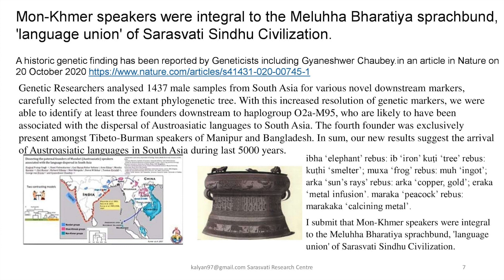Here is a Karain bronze drum like the Dong Son bronze drum, which shows an elephant — 'Iva' elephant — and a 'Kuti' tree — rebus 'Kuti' = smelter. A frog 'Mukha,' rebus 'Mugh' = ingot. On top of the tympanum: sun's rays 'Arka,' rebus 'Arka' = metal infusion, copper/gold. It also shows a peacock 'Maraka,' rebus 'Marakaka' = calcining metal, copper alloy. I submit that the Mon-Khmer speakers were integral to the Meluha Bharatiya Sprachbund — the language union of Saraswati-Sindhu civilization. These are the speakers who called a fish 'Aya,' rebus 'Aya' = iron, alloy metal.